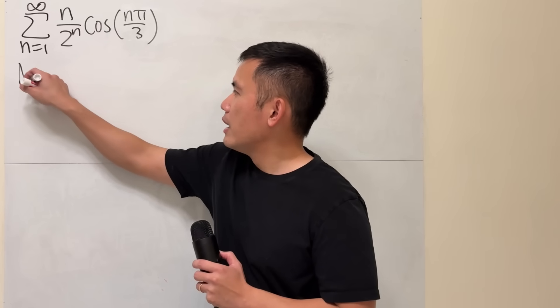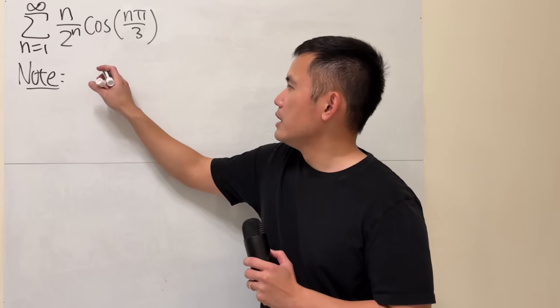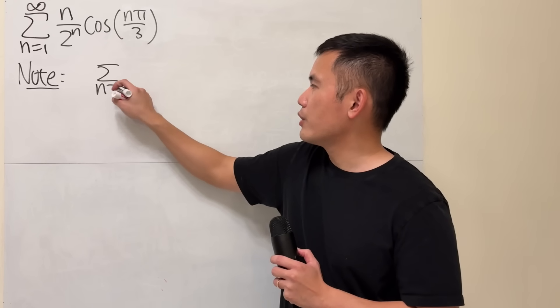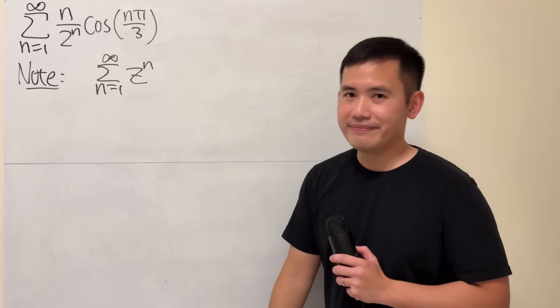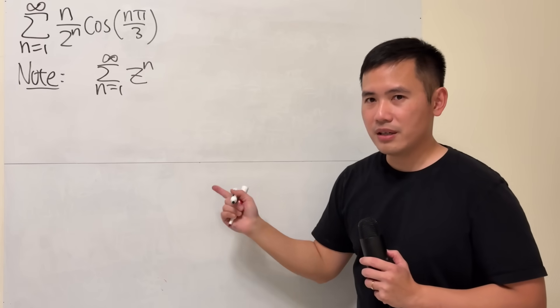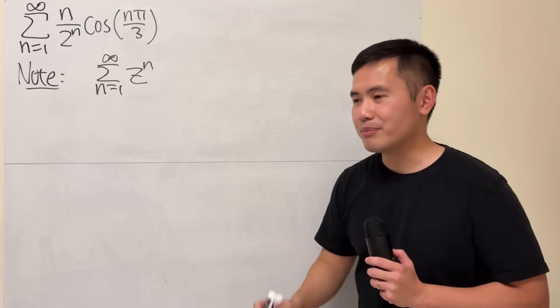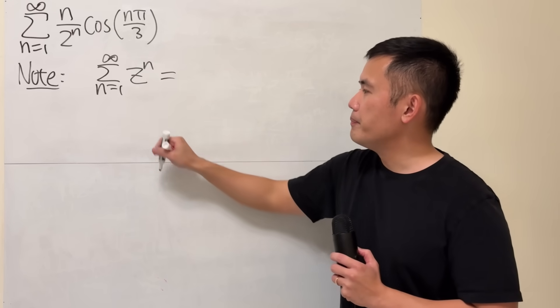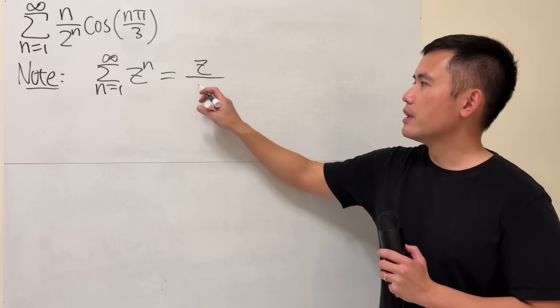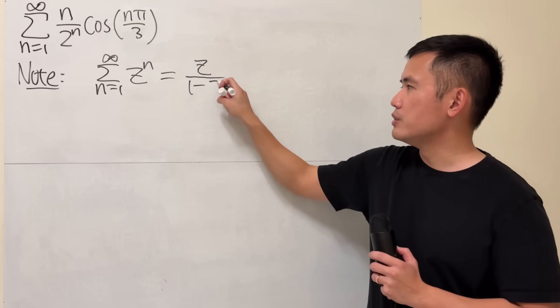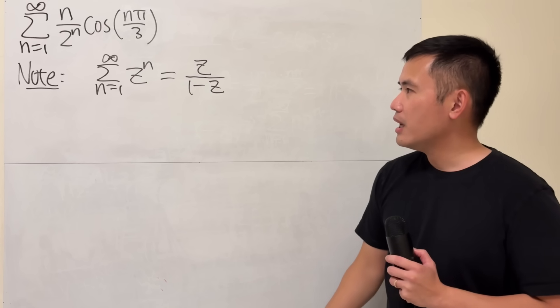So first, I'm going to write that. If we have the series as n going from 1 to infinity, z to the n's power, the reason I use z is because later on I will be using complex numbers. This will be the first term z to the first power, so z, over 1 minus the common ratio, which is z.